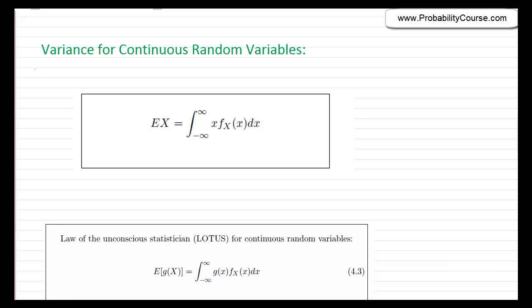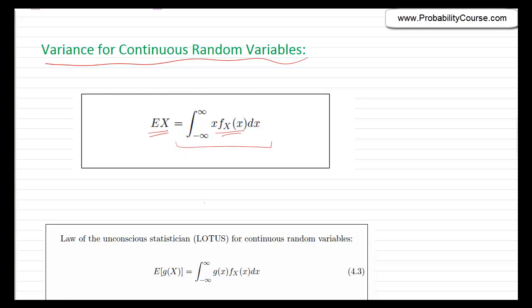In this video, we talk about variance for continuous random variables. In the previous video, we talked about the expected value for continuous random variables. In particular, we saw that the expected value of a continuous random variable x is given by this integral. It's very similar to the formula for discrete random variables, but we use integrals and a probability density function instead of a probability mass function.